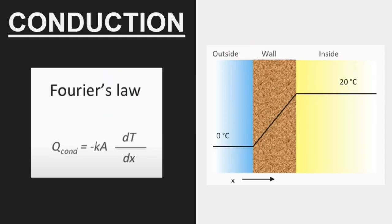Let's move on to the different modes of heat transfer. First, we have conduction: the transfer of heat in a medium due to a temperature gradient. Conduction is given by Fourier's law: q_conduction = −k·A·(dT/dx), where k is the thermal conductivity, A is the contact area, and dT/dx is the temperature gradient. For example, with 0°C outside and 20°C inside, the temperature rises uniformly through the wall via conduction.